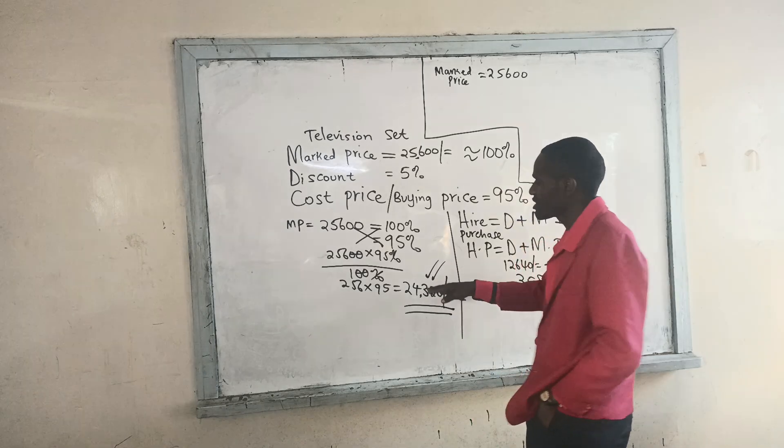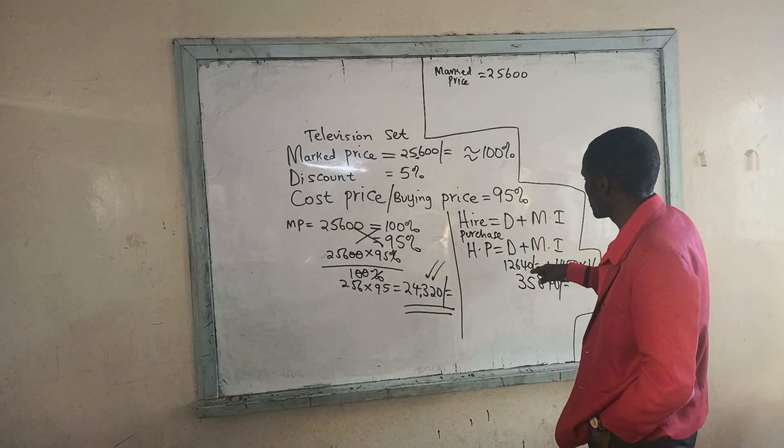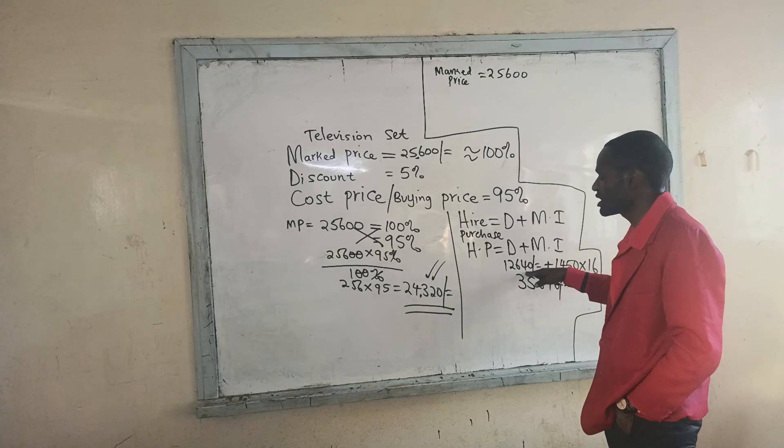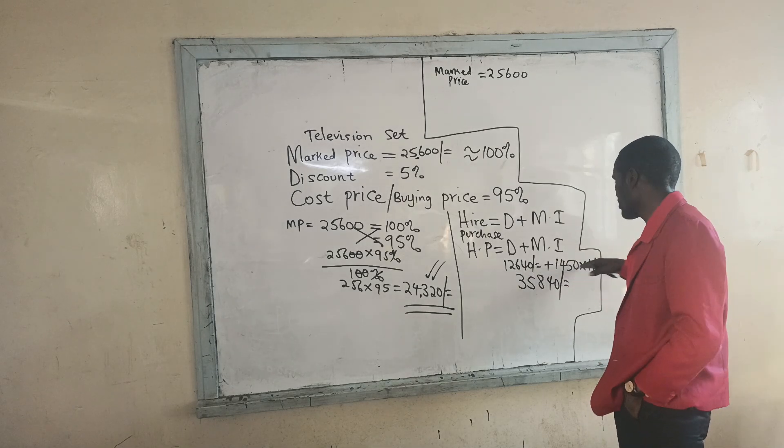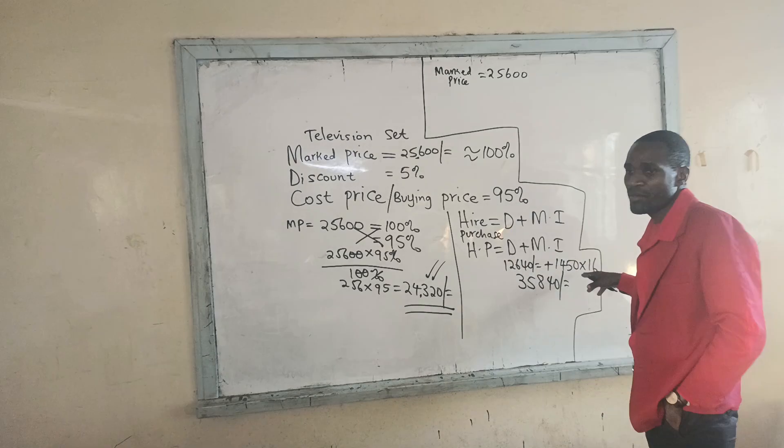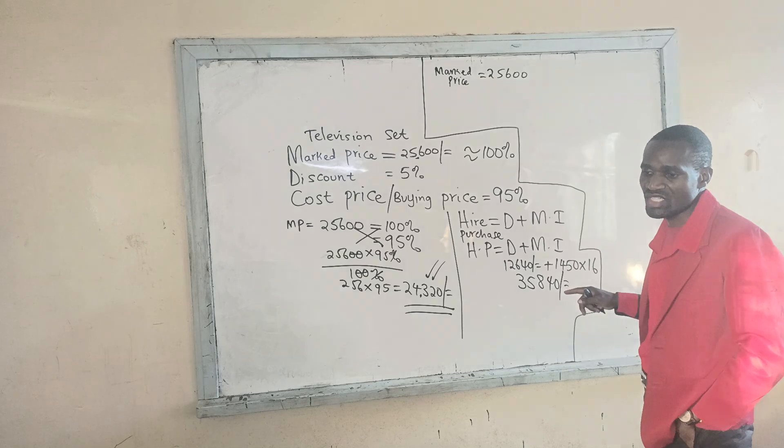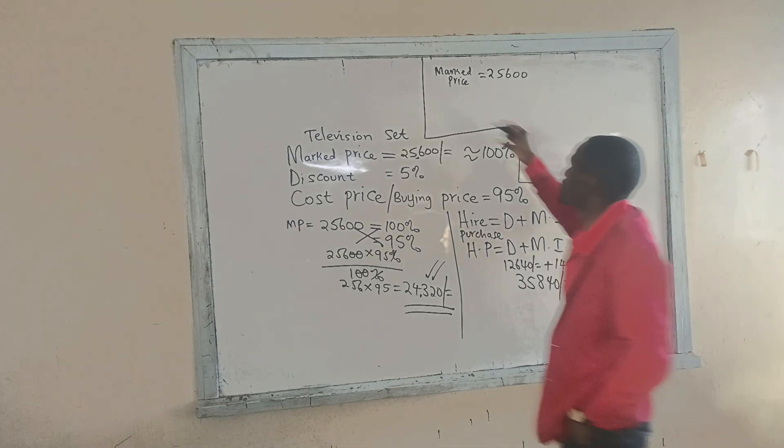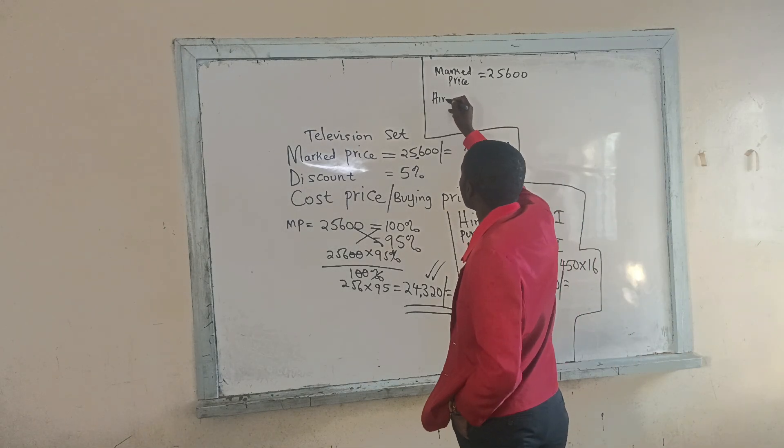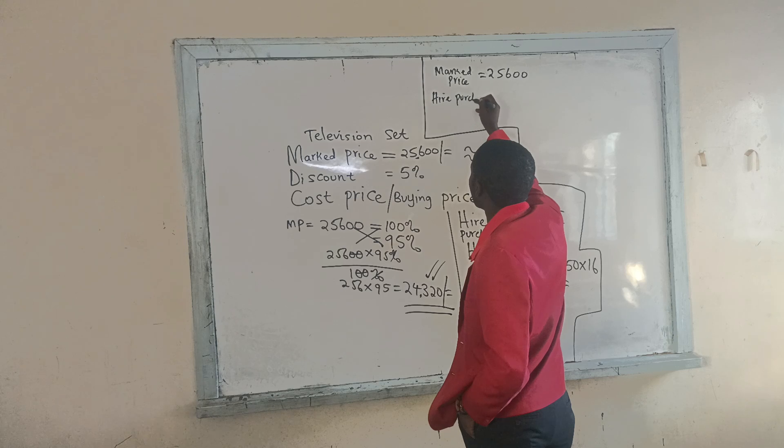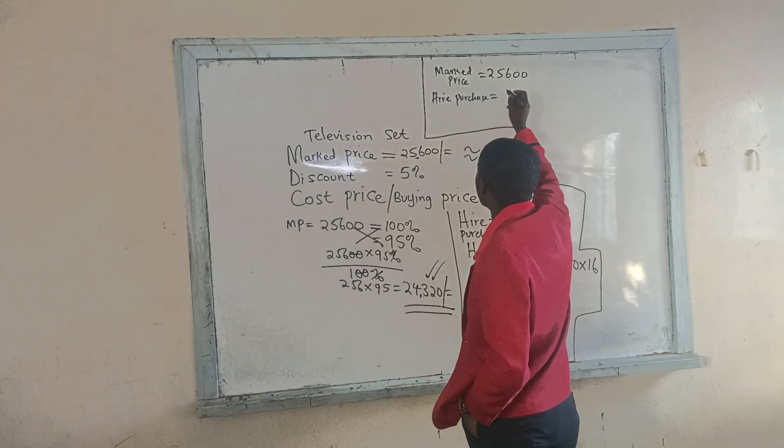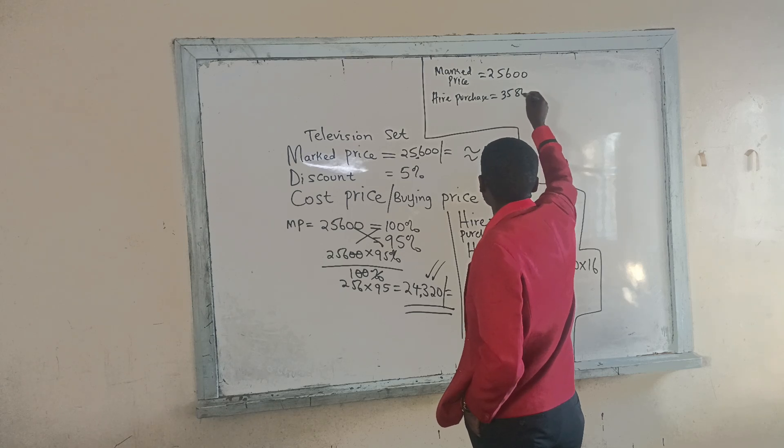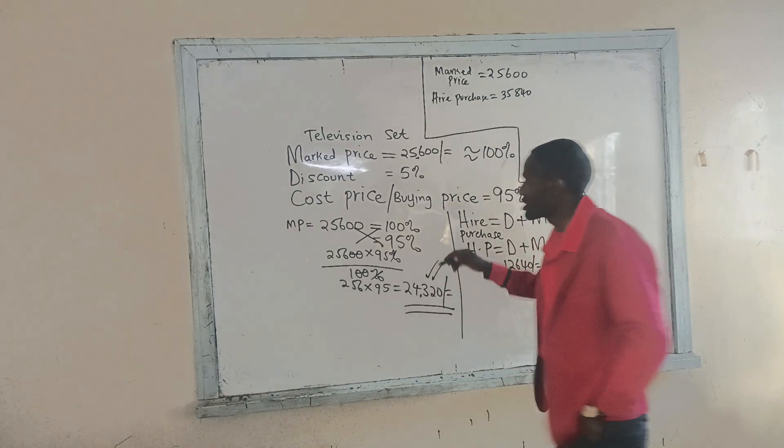If I do not have this money, I can be told to pay $12,640 as my deposit and clear the main balance in 16 months, paying $1,450 per month. So what is the hire purchase? I am going to have $35,840.